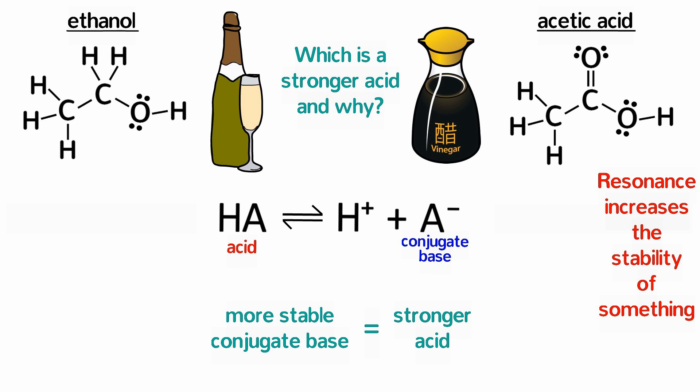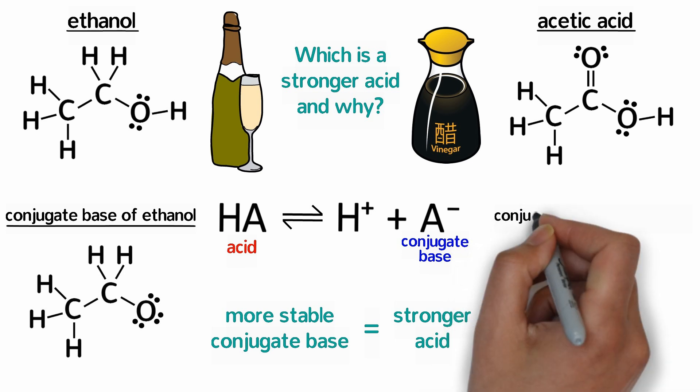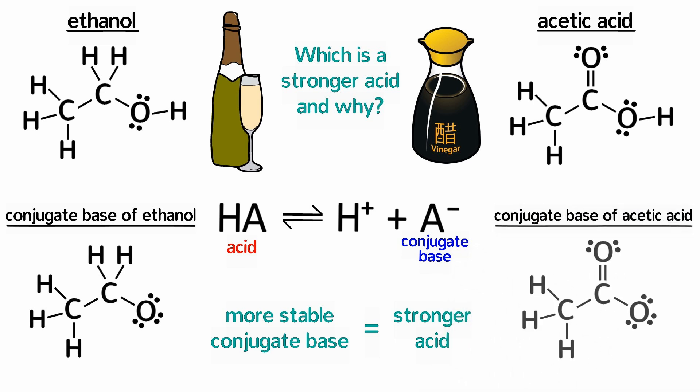To get the conjugate bases, all we need to do is remove an H-plus from the oxygen in both compounds. So the conjugate base of ethanol is ethoxide and the conjugate base of acetic acid is acetate.